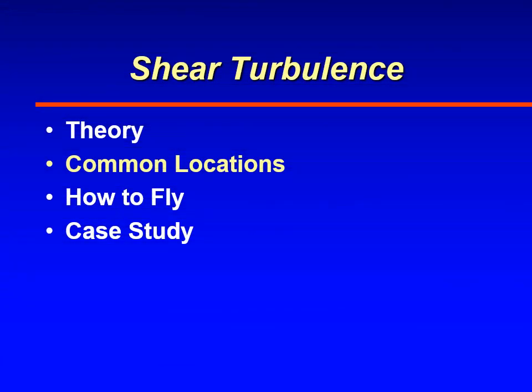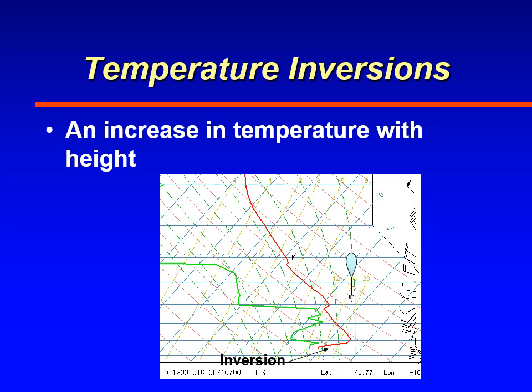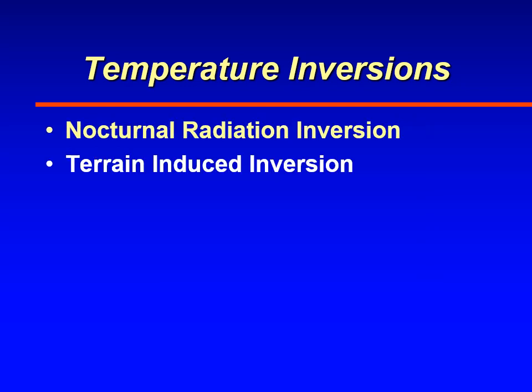Welcome to our discussion on shear turbulence. We're working through common locations for shear turbulence, and in this video we're going to talk about temperature inversions — a region in the atmosphere where temperature actually increases with height, opposite to the normal decrease. There are many different types, but we'll cover two: the nocturnal radiation inversion and the terrain-induced inversion.